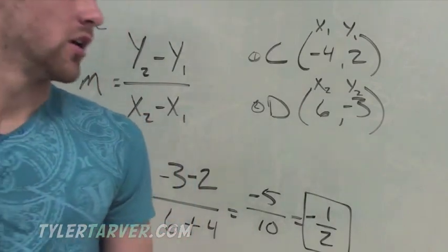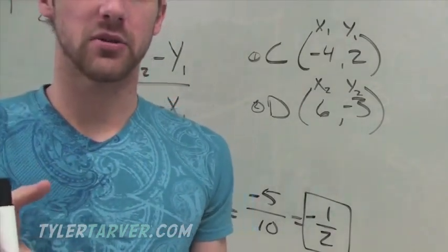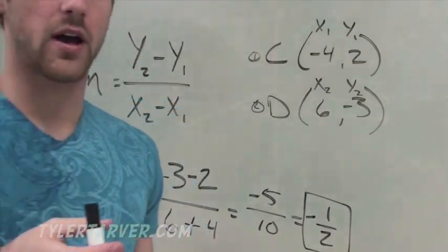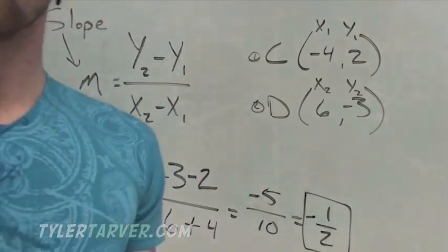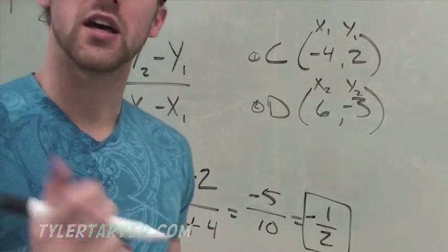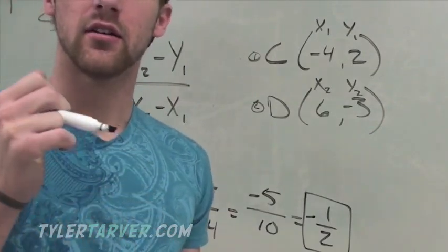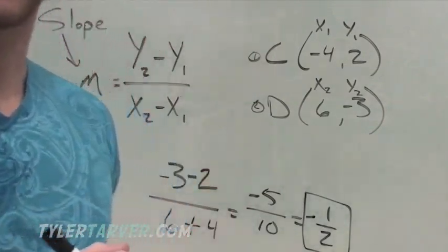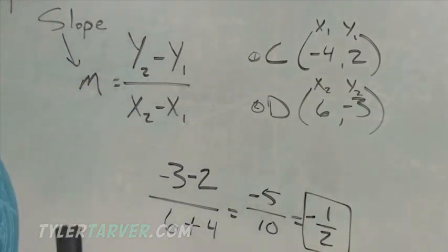Now you're going to have a problem flashed up on the screen, an example problem. Pause it, write down the problem and work it. Once you've worked it completely out, hit play and you can check it and make sure you did it correct. So once you see the problem come up, hit pause.